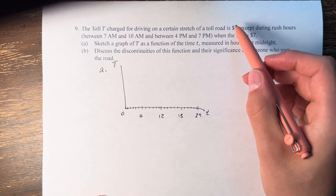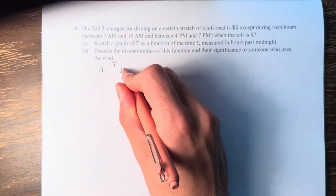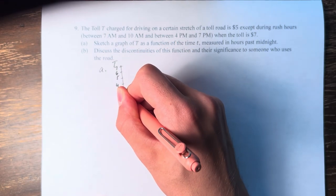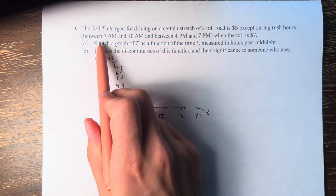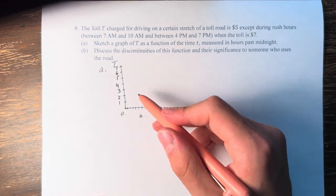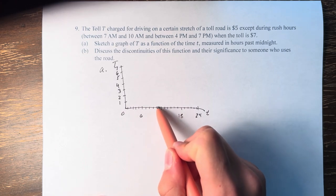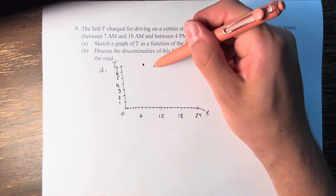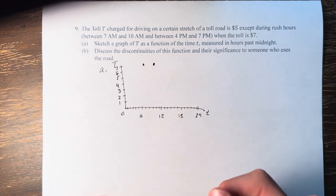We are told that the toll is either $5 or $7. So 1, 2, 3, 4, 5, 6, 7. And it is $5 except during rush hours of 7 a.m. to 10 a.m., so that's 7 hours after midnight to 10 hours. It's from 7 to 10 at $7.